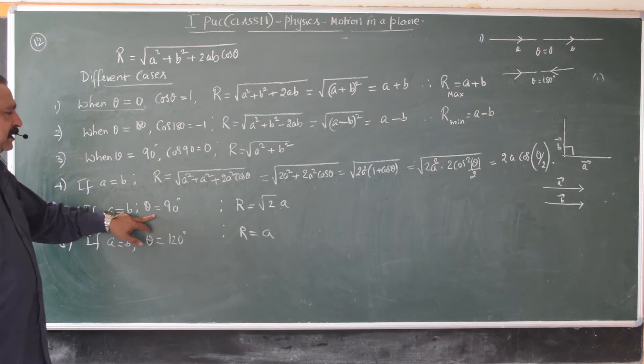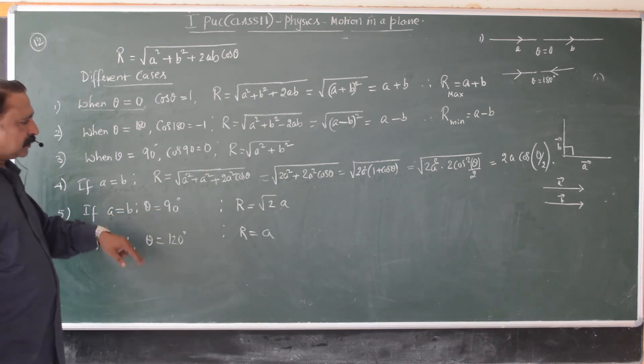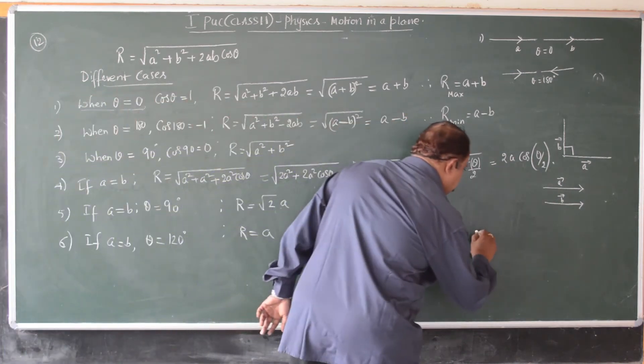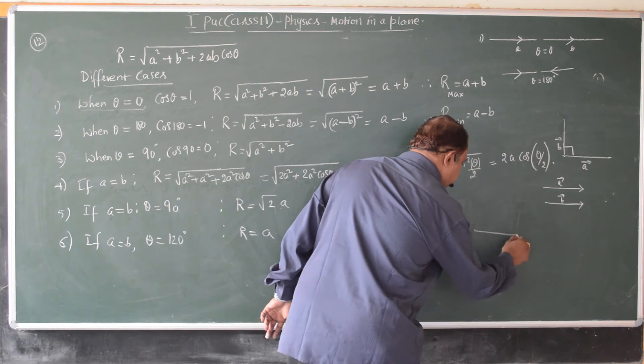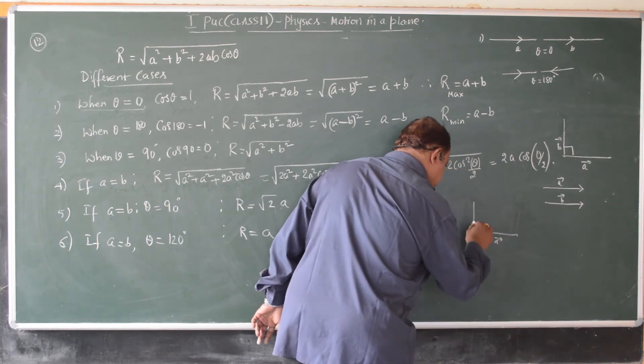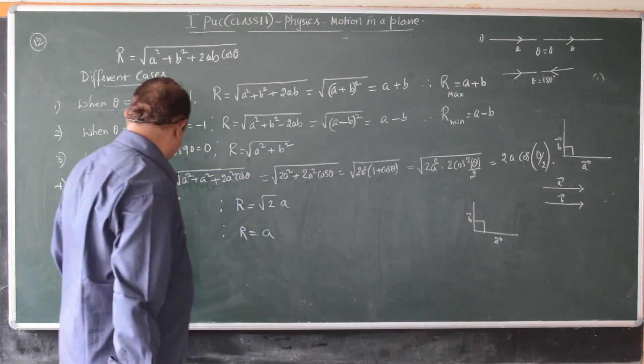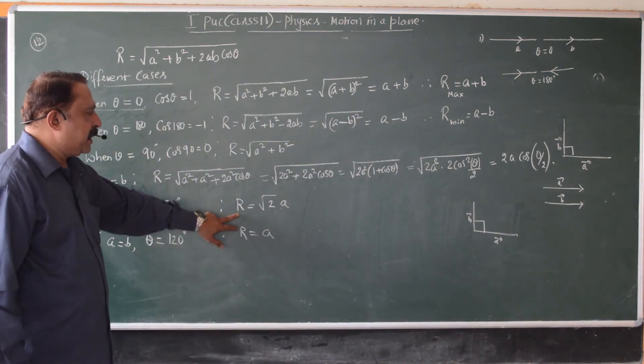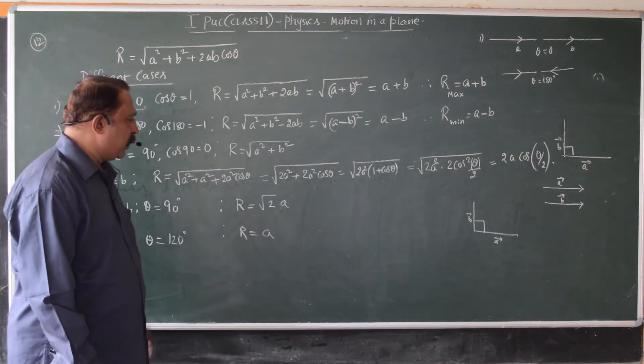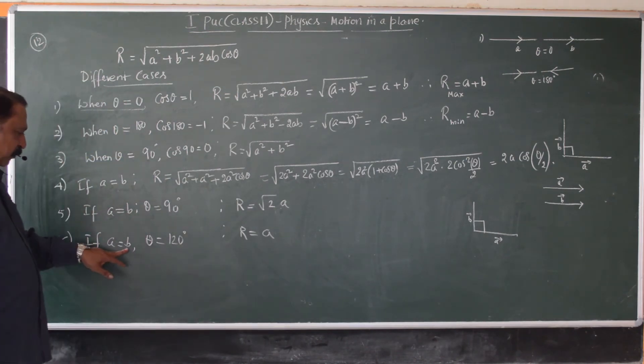If a equals b and theta is 90, the magnitude of vector a is same as the magnitude of vector b, and theta is 90 degree. In that case, r can be easily simplified and shown to be equal to a root 2.